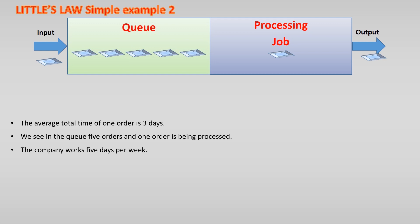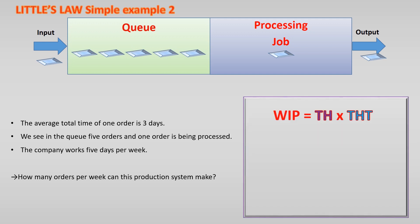We want to know how many orders this production system can produce every week. Now, we use Little's Law and we want to know the throughput.